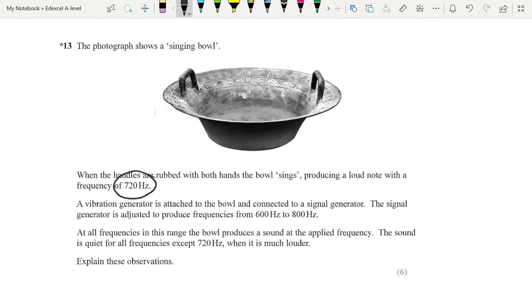And this is the question here, when you rub the handles, the bowl sings, producing a loud note with a frequency of 720 hertz. Now in this example, they give us the natural frequency of the bowl. You attach a vibration generator, and the signal is adjusted to produce frequencies from 600 to 800. So this is us increasing the driving frequency, like we had on the graph, from 600 to 800. So we should realize, from that graph, that as you move from 600 up to 800, as soon as you hit 720 hertz, you're going to get maximum oscillations, and the bowl will sing.